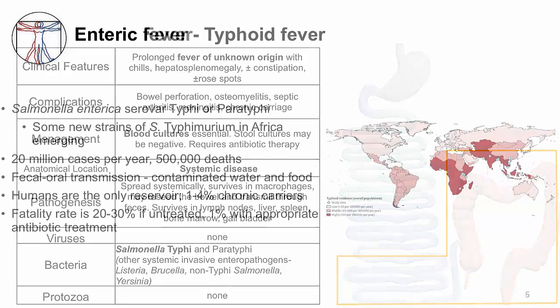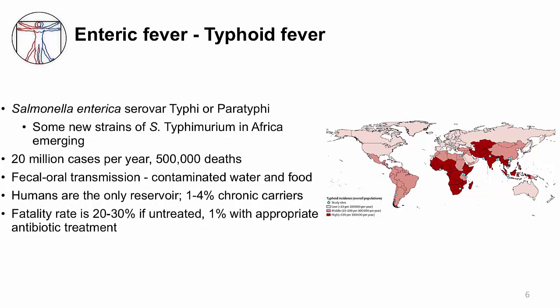The map on the slide shows the incidence of enteric fever. The dark red countries have the highest incidence, including Sub-Saharan Africa, India, Southeast Asia, and Central Asia. Enteric fever is endemic in developing countries, so I typically see these infections in returning travelers.